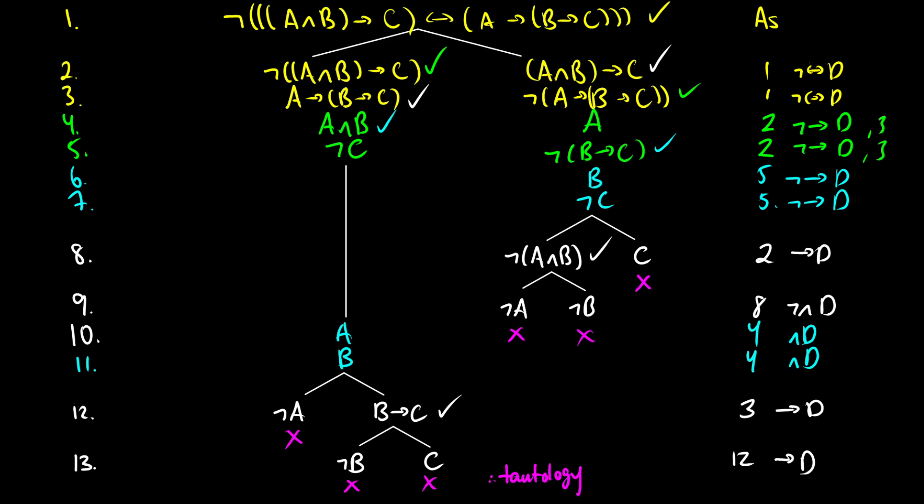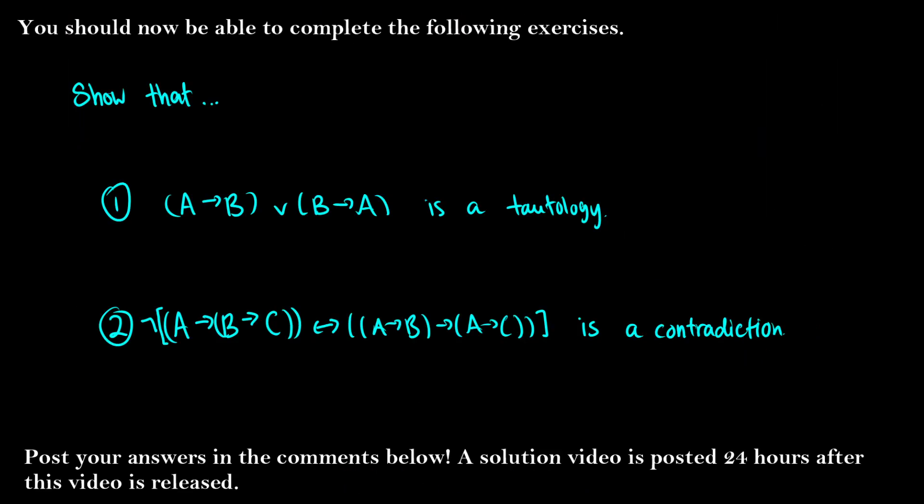So we know that this is therefore a tautology, and it's a tautology because the negation of the original sentence closed. That's it for tautologies and contradictions. At this point, you should be able to complete the following exercises. I want you to try with your own truth tree to see whether one is a tautology and two is a contradiction. Post your answers in the comments below if you can. If you have any questions, post them in the comments below and I'll do my best to help.